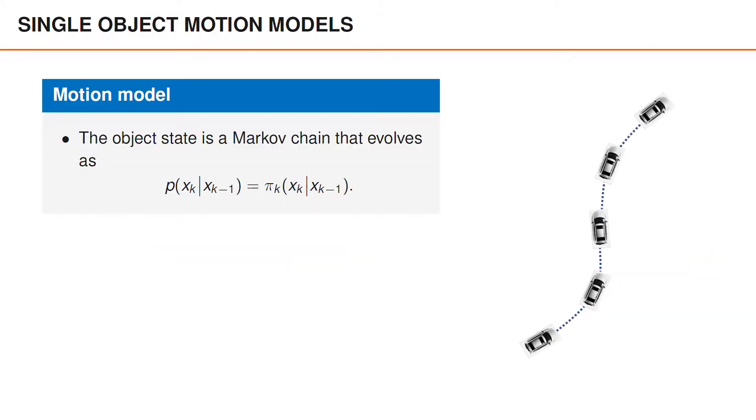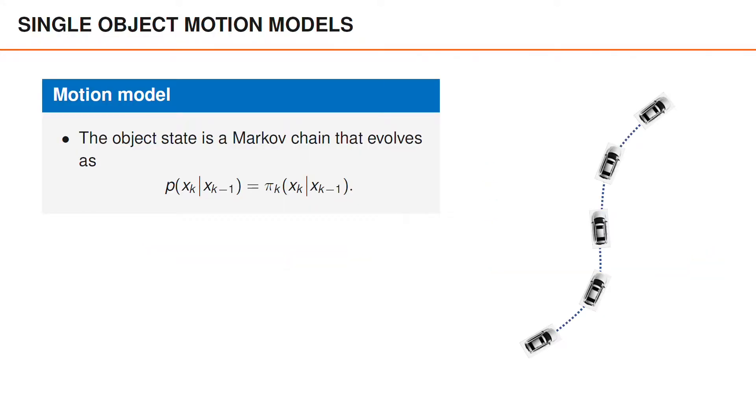Let us start with the single object motion model, which actually hasn't changed since last week. We use x_k to denote the object state at time k, and assume that it is a Markov chain that evolves according to some motion model, p of x_k given x_{k-1}. As you have already seen, we normally use p to denote densities, and you actually need to look at the input variables to know which densities we are referring to. This gives us a compact notation that we normally find sufficiently clear.